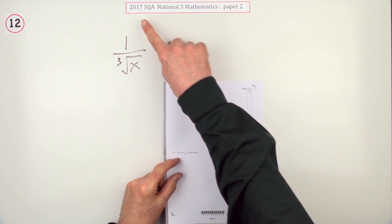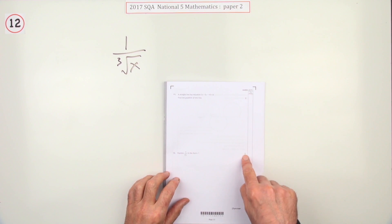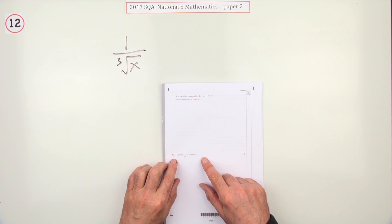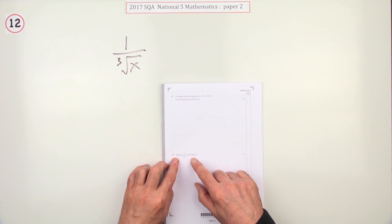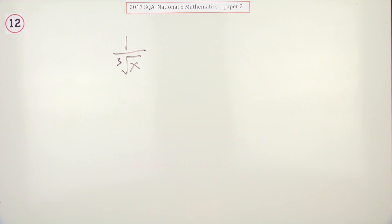Number 12 from paper 2 of the 2017 National 5. Two marks. Here's a wee tiddler of a question. All those scary surds and indices that just haven't turned up in this paper. And that's the only indices one that you're getting.